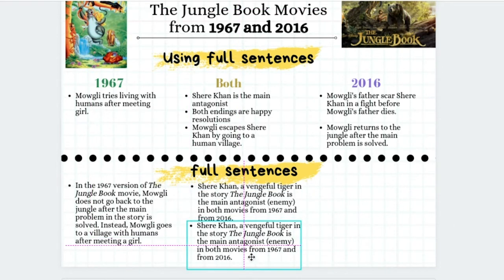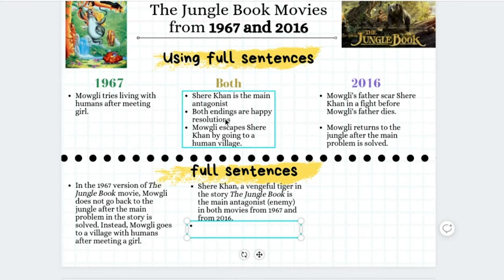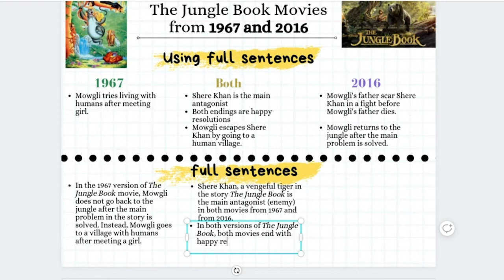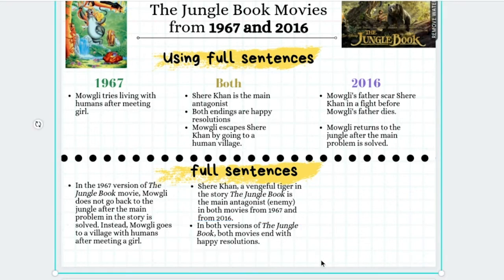The next point we're going to talk about is 'both endings are happy resolutions.' We'll begin our sentence again pretending that the reader has absolutely no idea what we're talking about. In both versions of the Jungle Book, both movies end with happy resolutions. Good job.